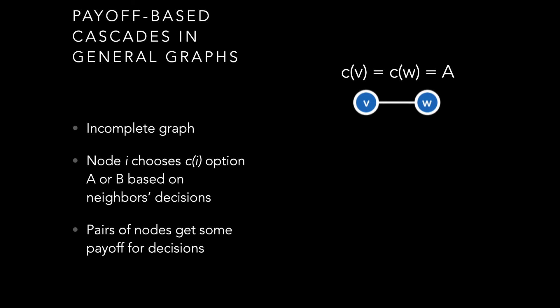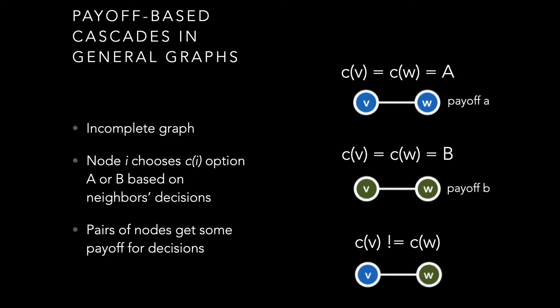For every pair of nodes, I get some payoff for some decision. If myself and some neighbor have decided on the same action, we get some payoff A. If both of us have decided on the other action, we get some payoff B. The only time we get no payoff is if we don't agree — if my neighbor and I each take different actions, we get zero payoff.